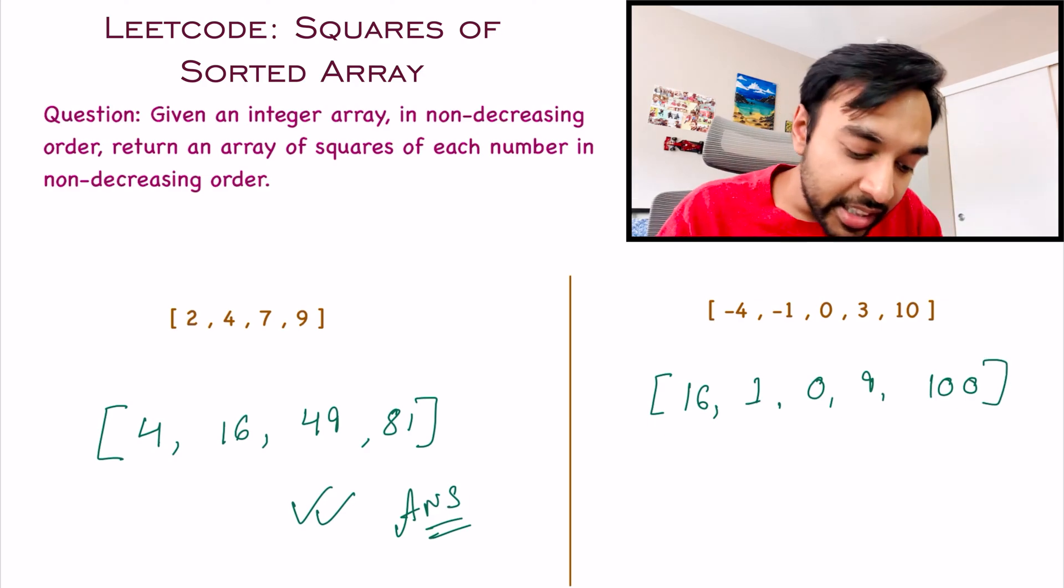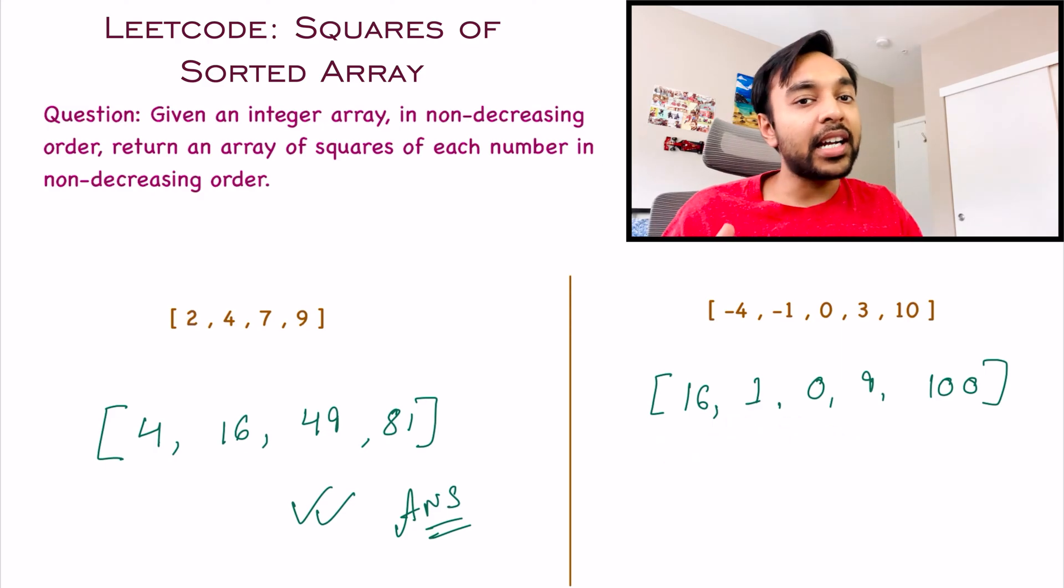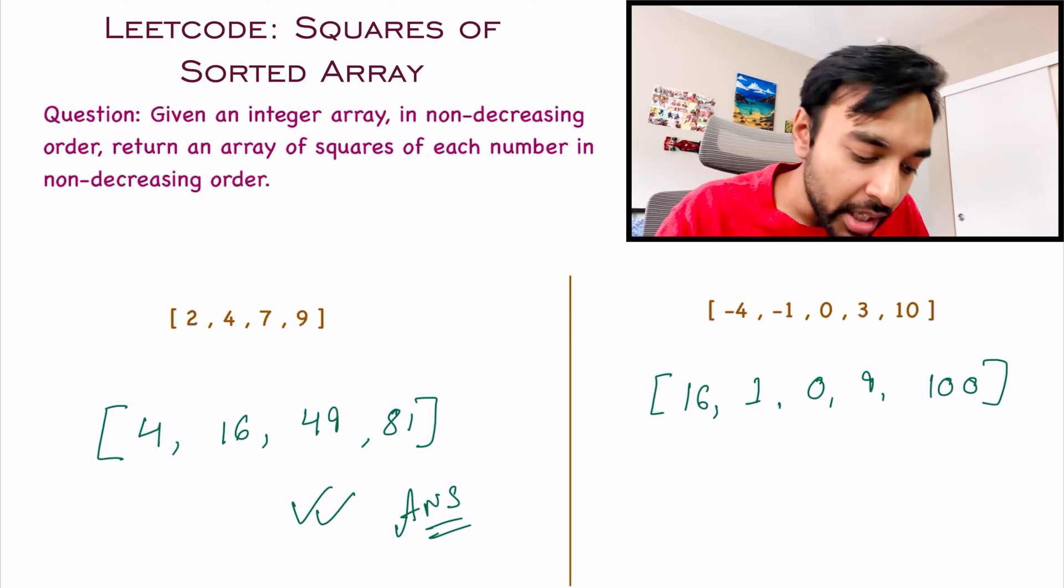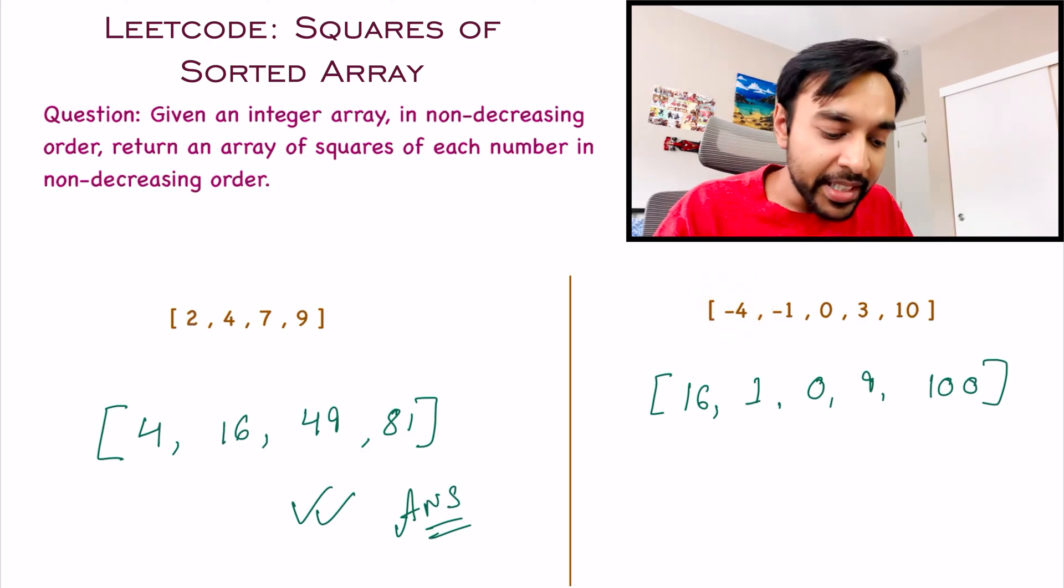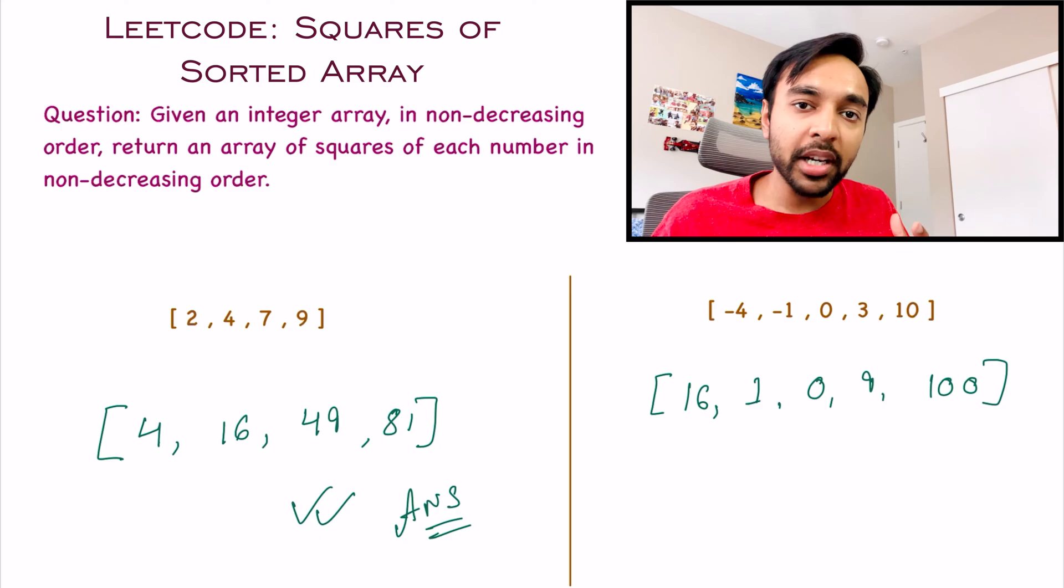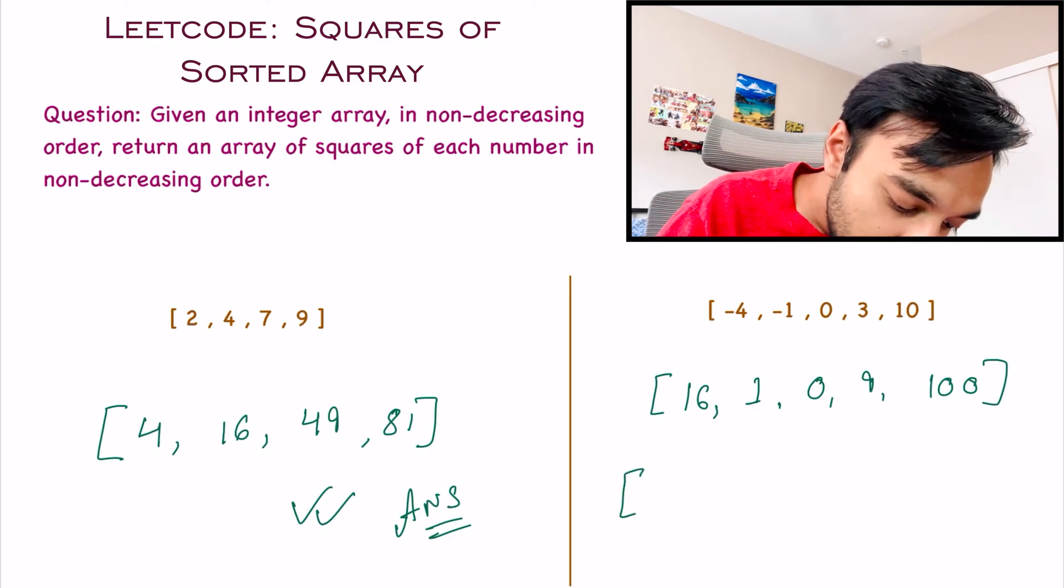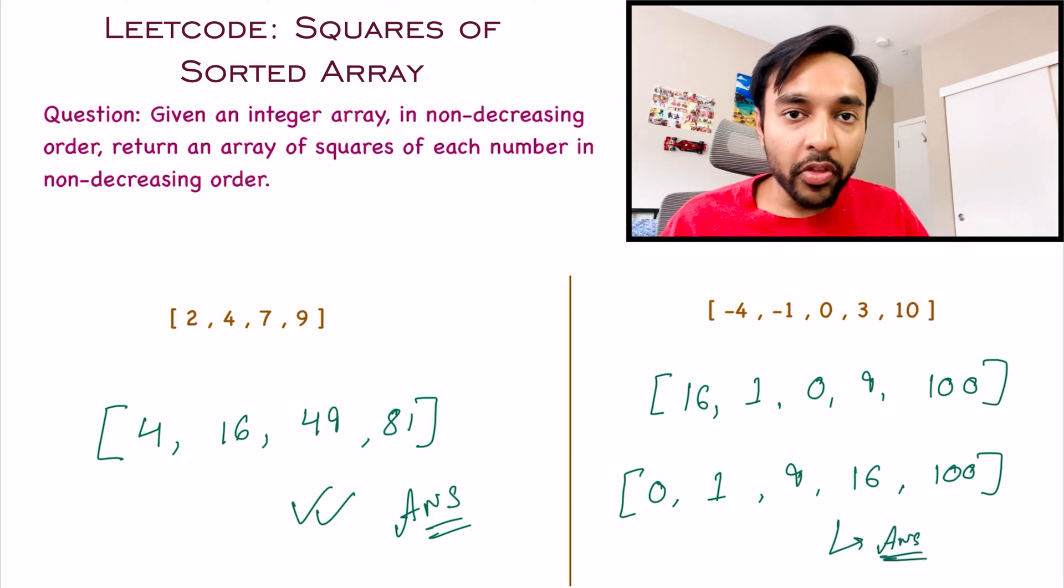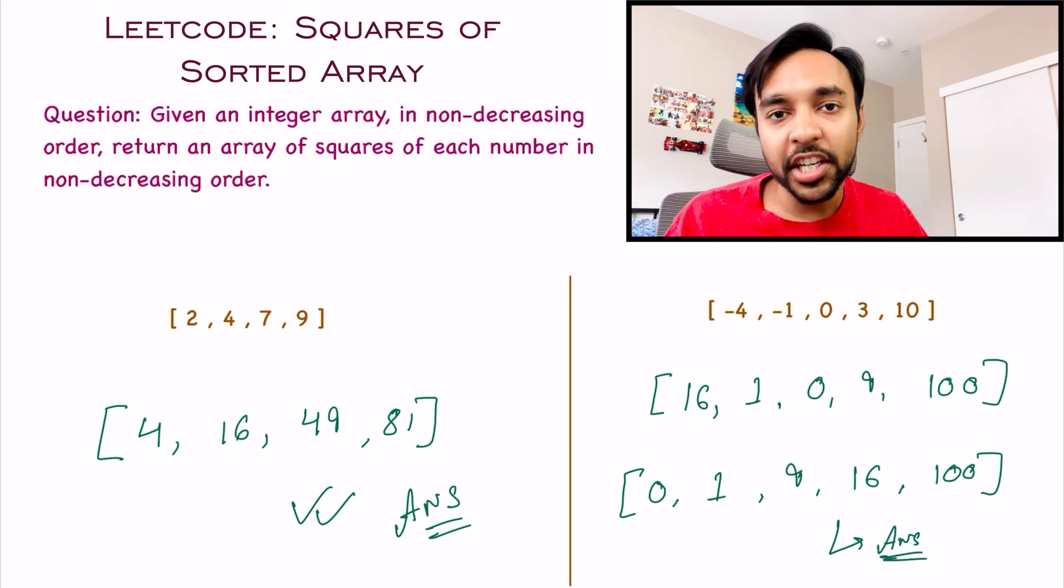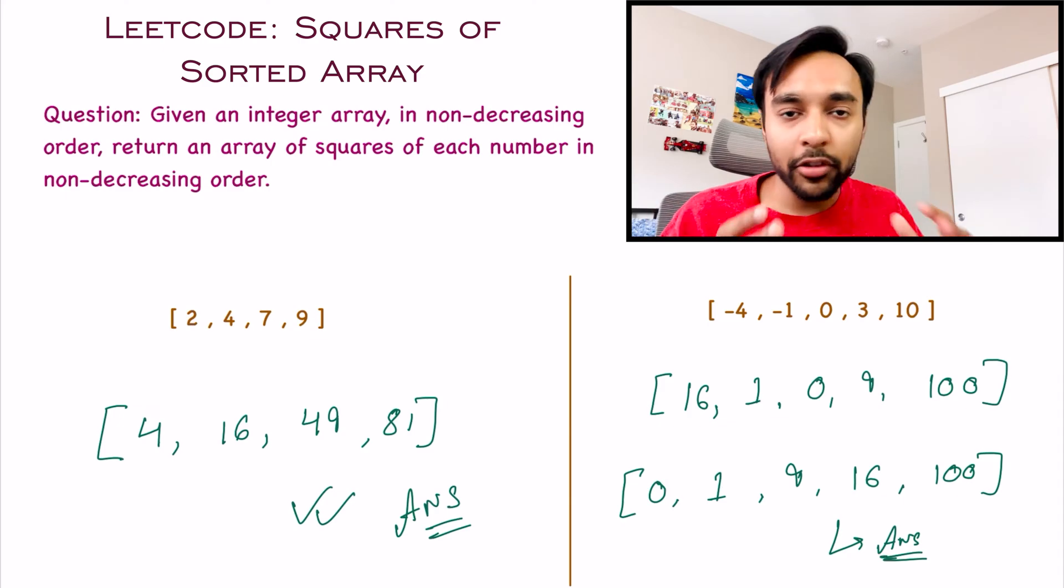If you notice, this array is no longer in an ascending order. And that is because when you find the square of a negative number, it will become positive. So the square of minus 4 will be 16. This is a positive number. So the correct answer to this test case would be where you took care of all the negative numbers in a correct manner. Now, if you want to try this problem once again on your own, feel free. Otherwise, let us dive into the solution and see what we can do about it.